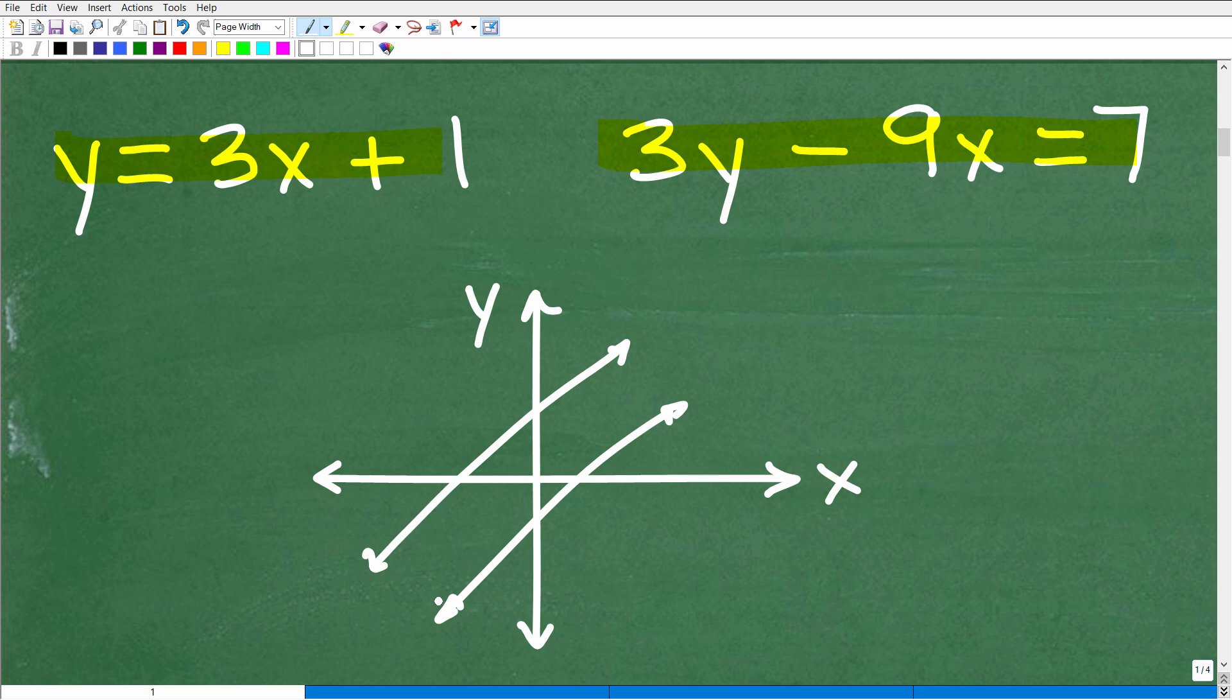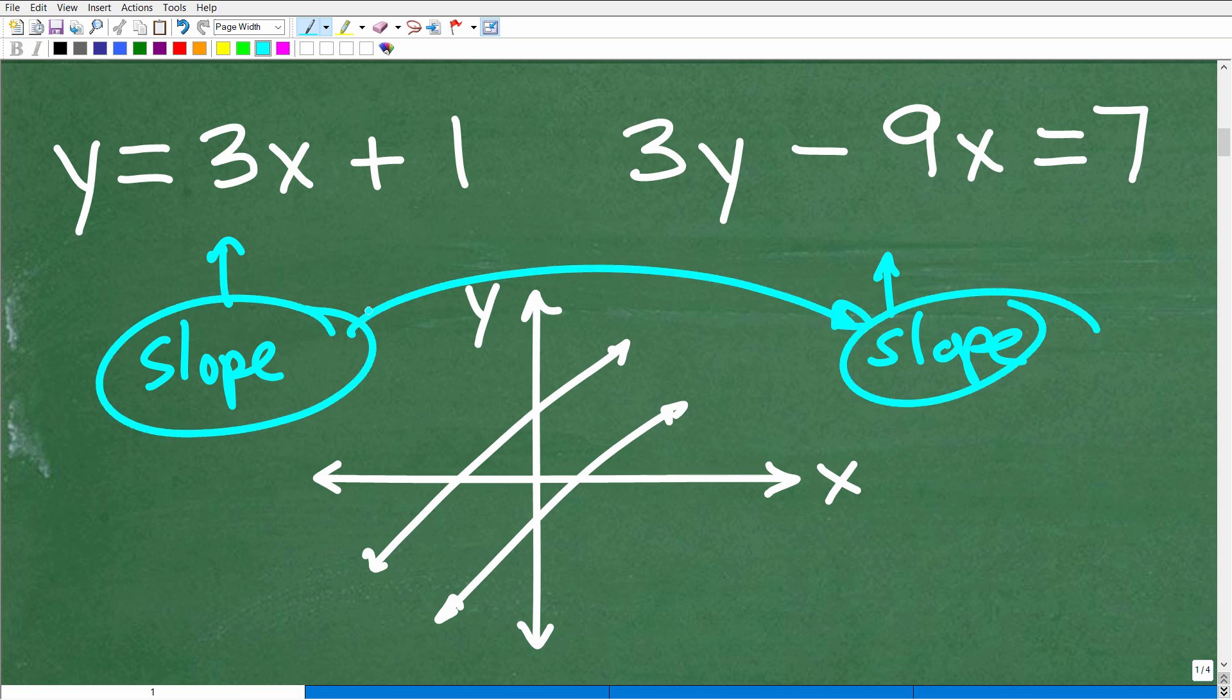Matter of fact, here we don't even need to look at the xy plane. All we need to do is have a good understanding of the slope of a linear equation or slope of a line. Now what we're going to do in both of these lines is find the slope. And in fact, if these two slopes are the same, then it tells us that these two lines are indeed parallel.